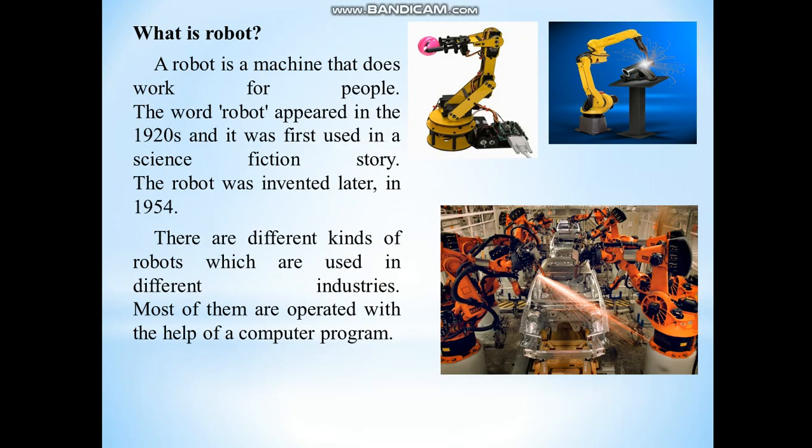What is a robot? A robot is a machine that does work for people. The word robot appeared in the 1920s and it was first used in a science fiction story. The robot was invented later in 1954. There are different kinds of robots which are used in different industries, and most of them are operated with the help of a computer program.